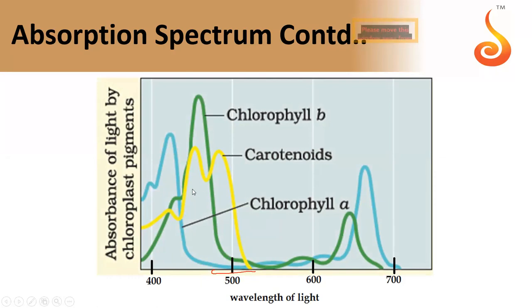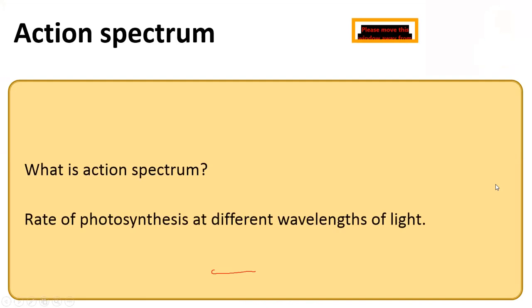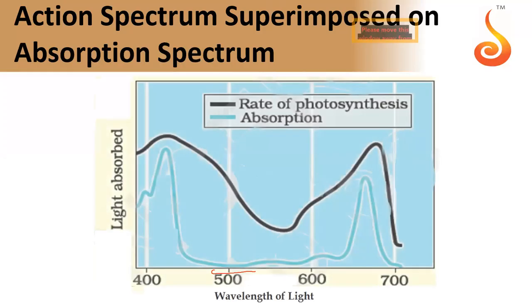This graph shows the absorption spectrum of various pigments — chlorophyll A, chlorophyll B, and carotenoids. The blue color graph represents the wavelength absorbed by chlorophyll A, the green one represents chlorophyll B, and yellow represents carotenoids. Next is the action spectrum: the rate of photosynthesis at different wavelengths of light after absorbing light in the respective wavelength by pigments is called the action spectrum.